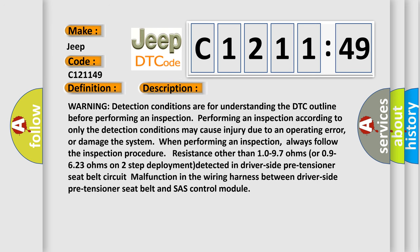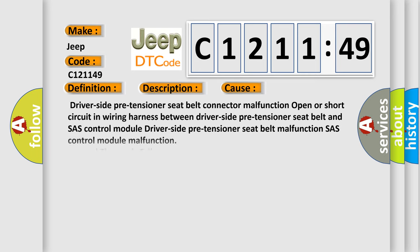And now this is a short description of this DTC code. Warning detection conditions are for understanding the DTC outline before performing an inspection. Performing an inspection according to only the detection conditions may cause injury due to an operating error or damage the system. Always follow the inspection procedure. Resistance other than 10 to 97 ohms or 09623 ohms on two-step deployment detected in driver side pre-tensioner seat belt circuit indicates malfunction in the wiring harness between driver side pre-tensioner seat belt and SAS control module.